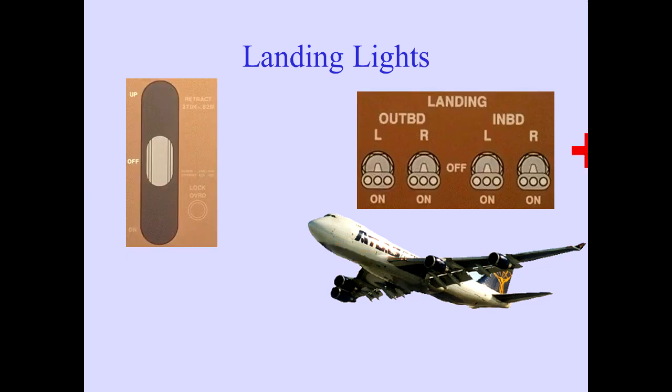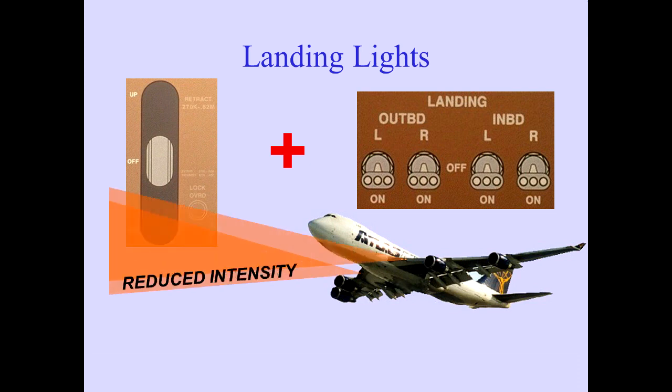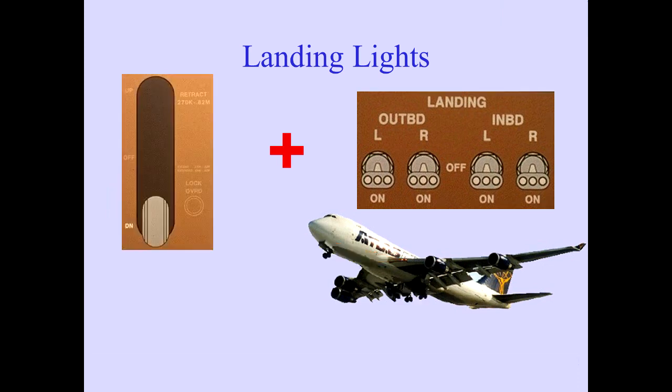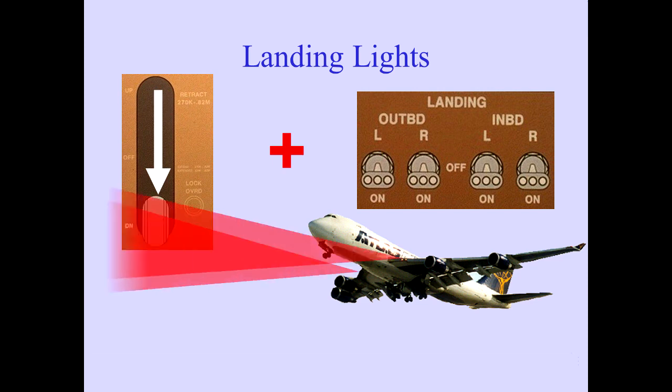With the landing gear lever in the up position and the switches on, the wing landing lights illuminate at reduced intensity. With the landing gear lever in the down position and the switches on, landing lights illuminate at maximum intensity.